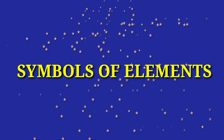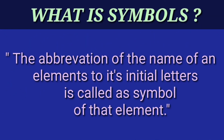First we see what is the symbol. The abbreviation of the name of an element to its initial letters is called the symbol of that element. The symbol of any element consists of maximum two letters and minimum one letter. The first letter of the symbol is a capital letter while the second letter is a small letter.